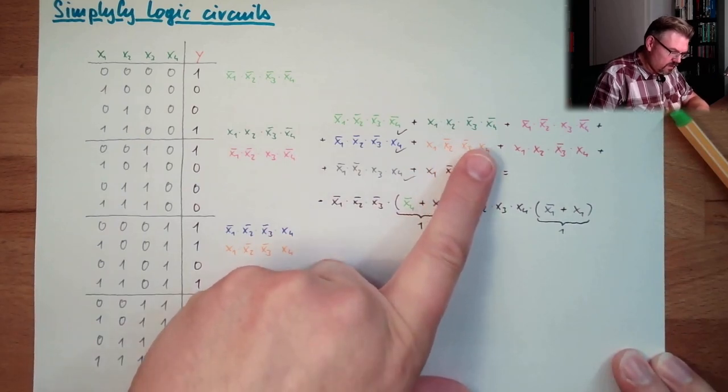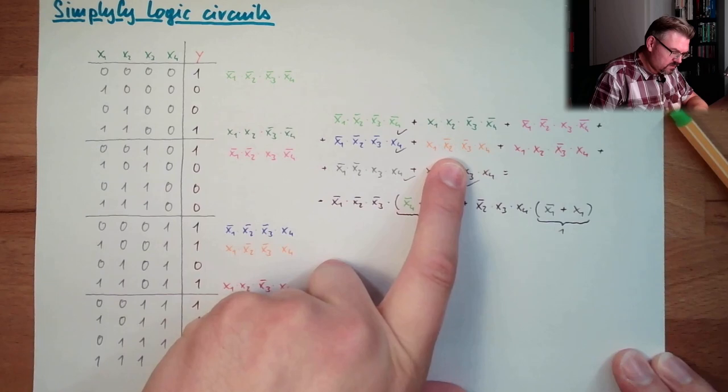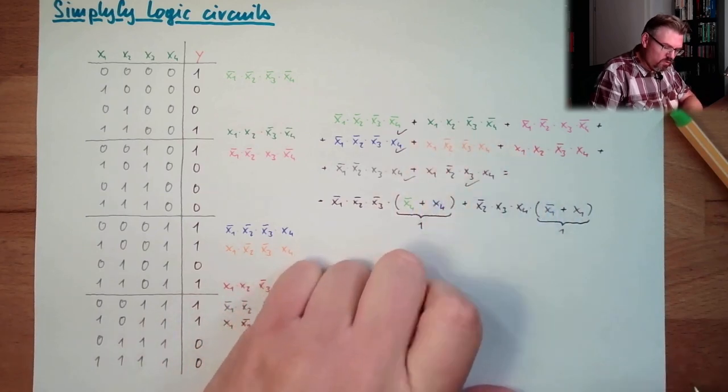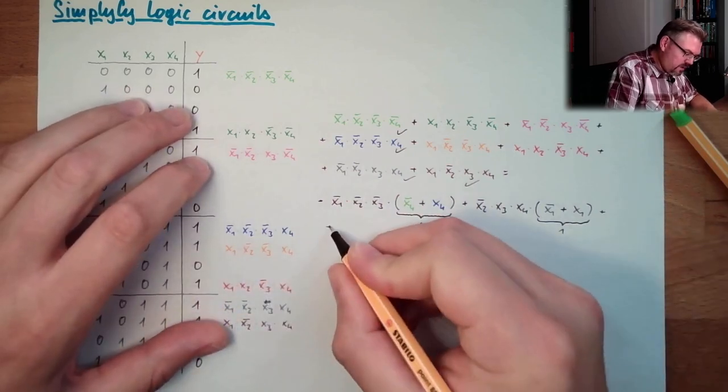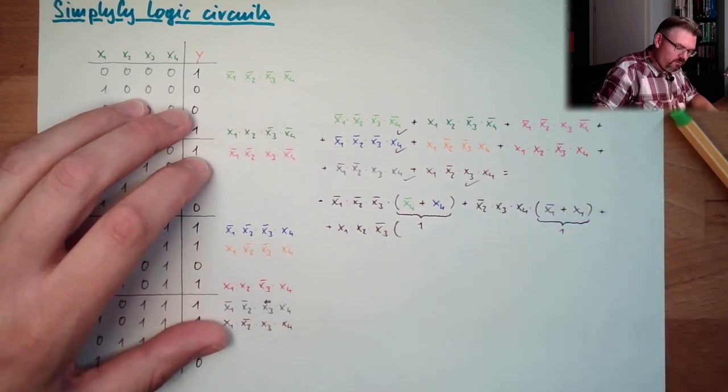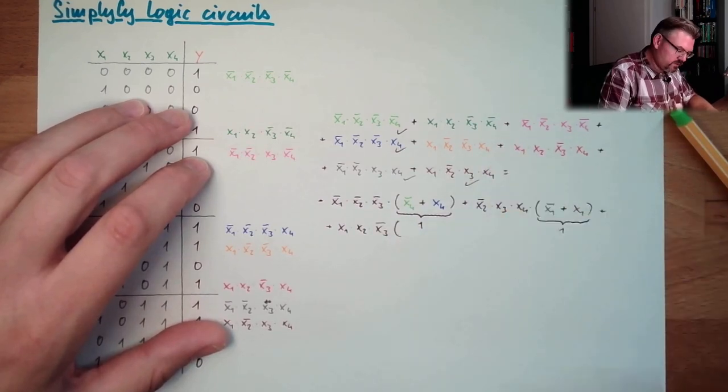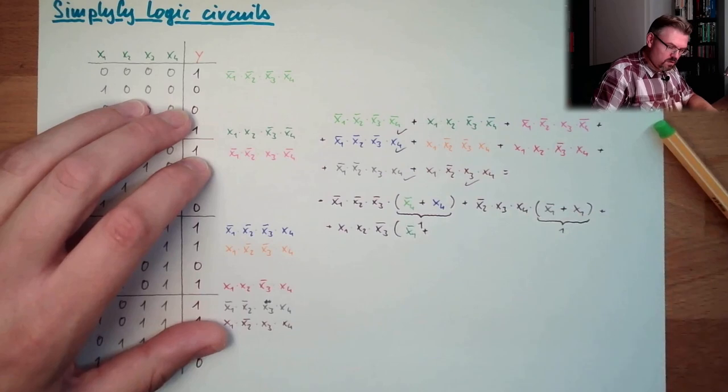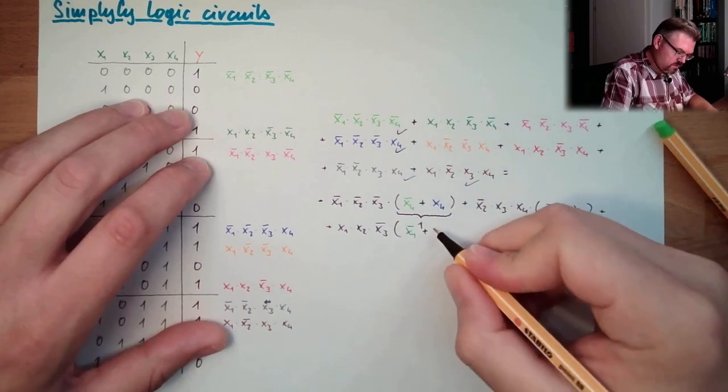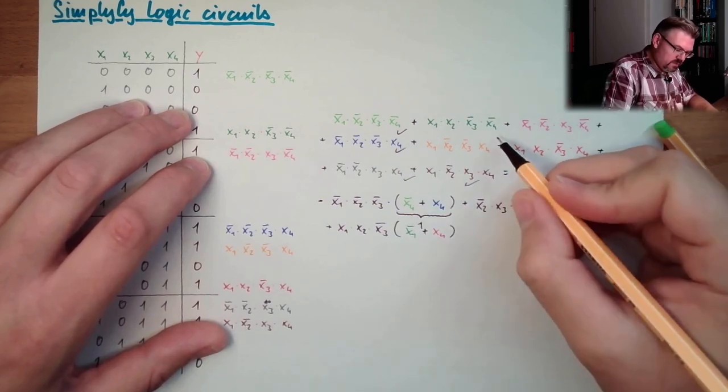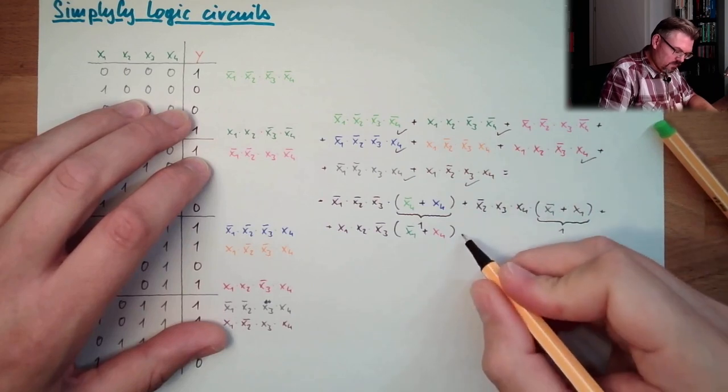So, I have these two terms as well. What can be done? Here somewhere NOT x3. Ah, here! Those two! Great! Yeah? We have here x1 and x2 and NOT x3. Yeah? And what is left is here from this one NOT x4, NOT x4 again or x4. Good! So, I have these two terms as well.